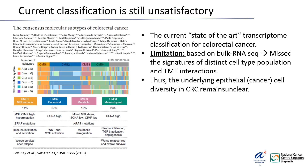Despite being able to distinguish most of the CRC tumors, the CMS classification is still based on bulk RNA-seq, which will obscure the signature of distinct cell populations and completely miss microenvironment interactions. Because of this reason, the underlying epithelial cell diversity in CRC remains unclear.